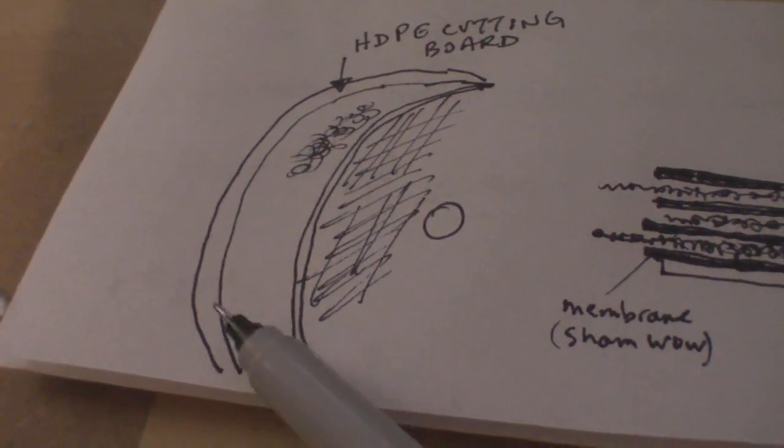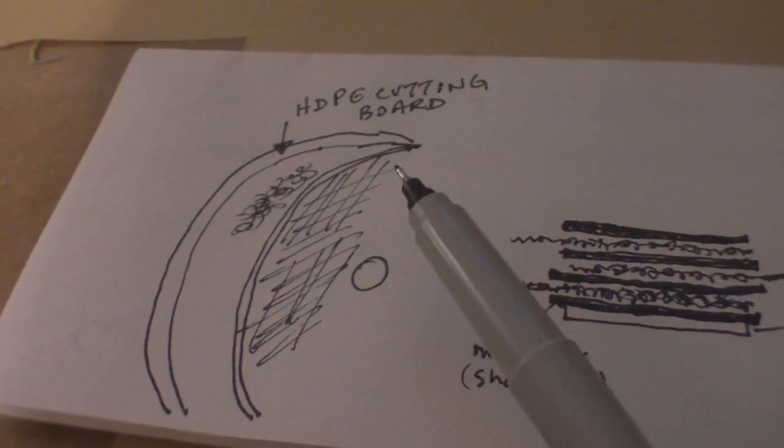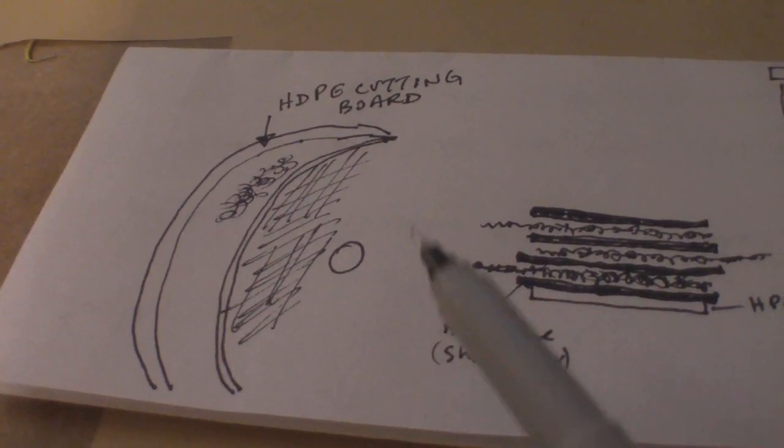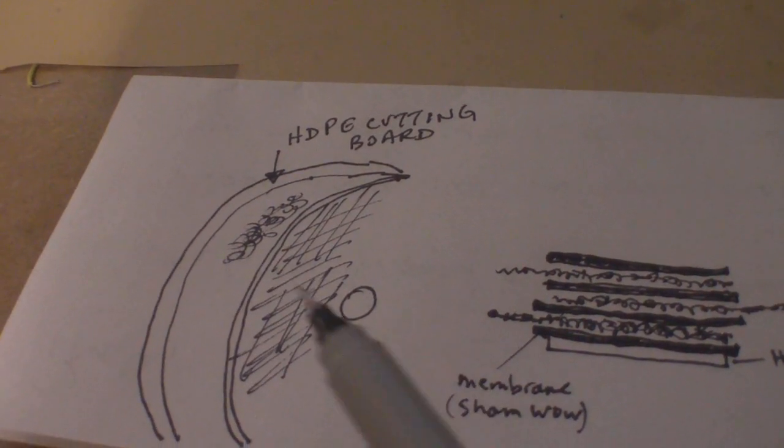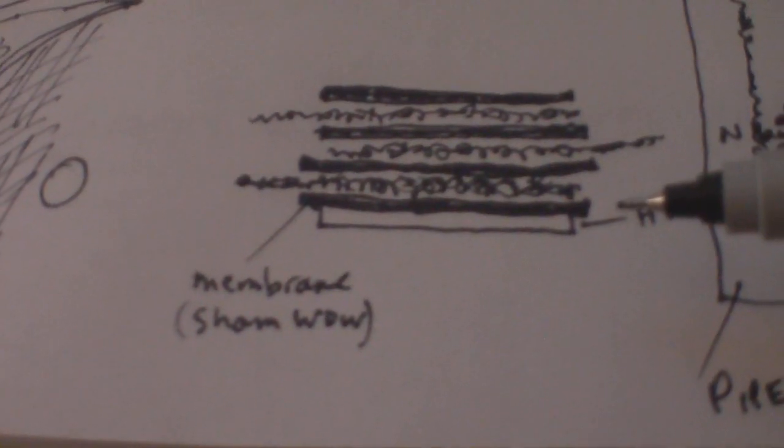Circular disc cut out of cutting board, circular disc cut out of this fake cheap ShamWow membrane stuff with a hole in the center of each. The concept is that you stack layers.